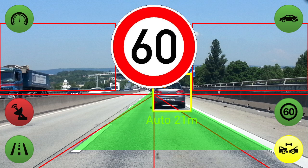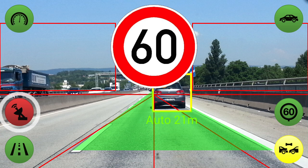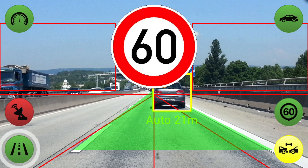The server connection is represented by a satellite dish symbol. The server connection is responsible for synchronizing the location of speed signs between the server and your smartphone. The lane control is represented by the road symbol.